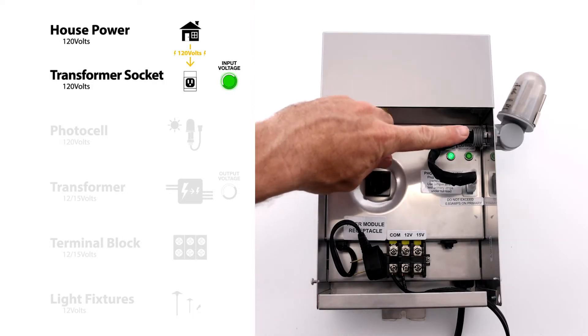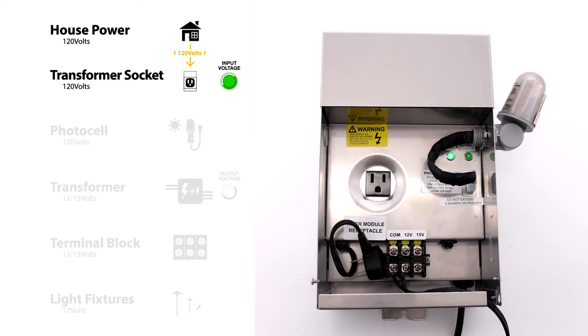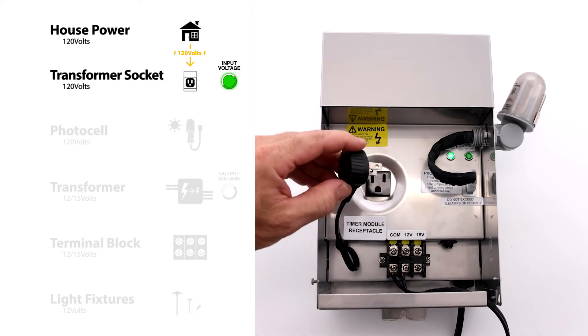The power enters the unit at the socket. As soon as it is plugged in, the first indicator light comes on. This way you know you have power to the unit.